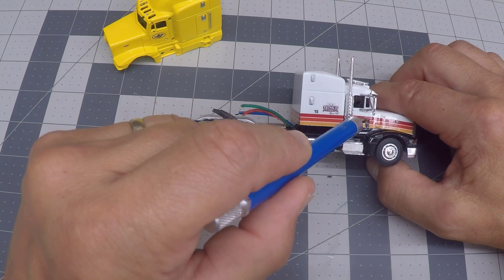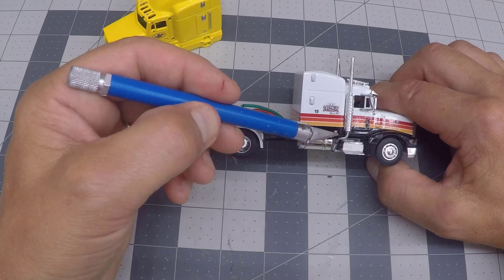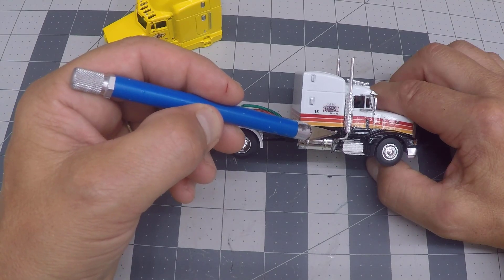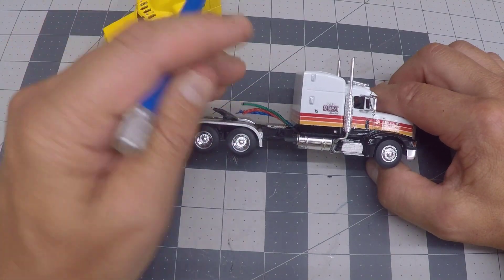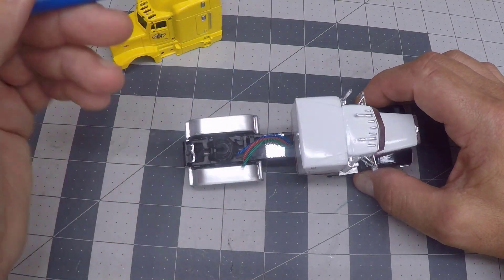Paint pen came in to make this little window here that exists on the real truck, and then a Molotow chrome pen was used to make the unibilt sleeper icon stand out along with these two doors on the sleeper, and then they had clearance lights on top of the cab.